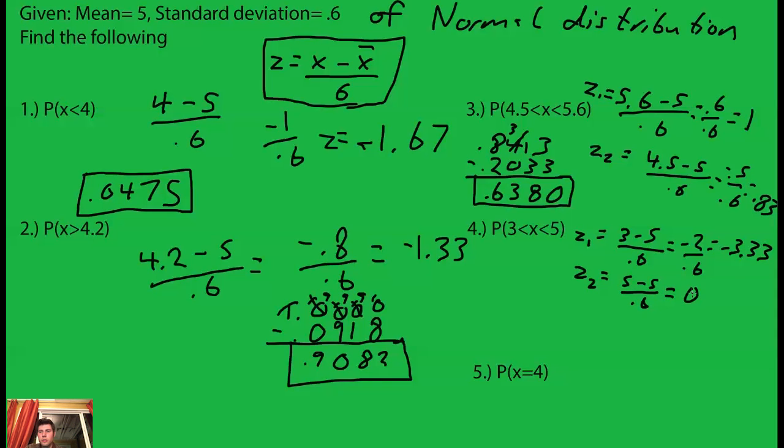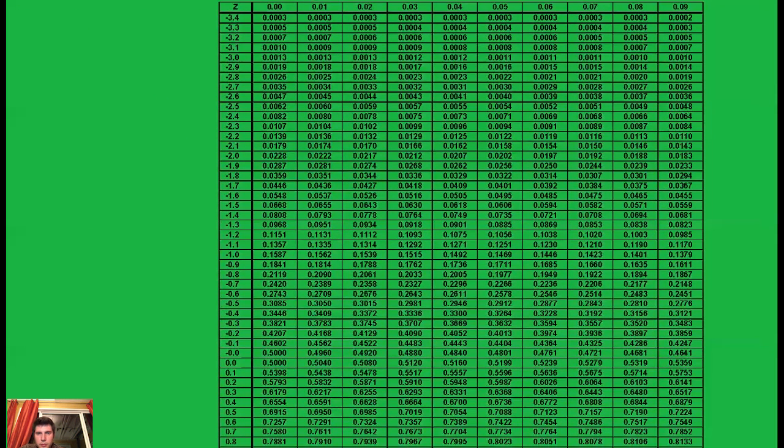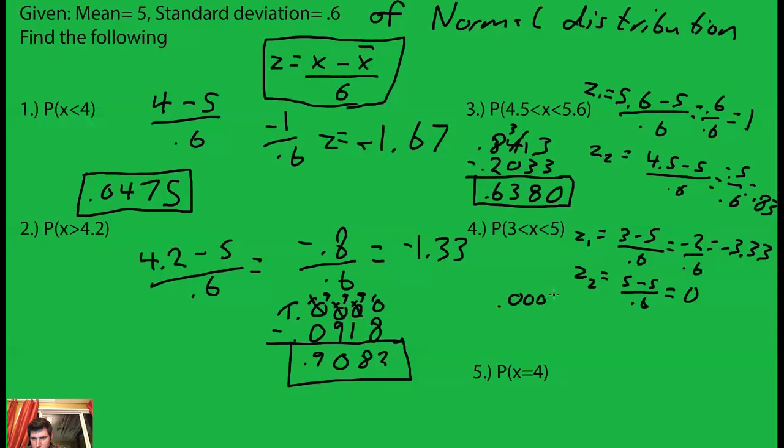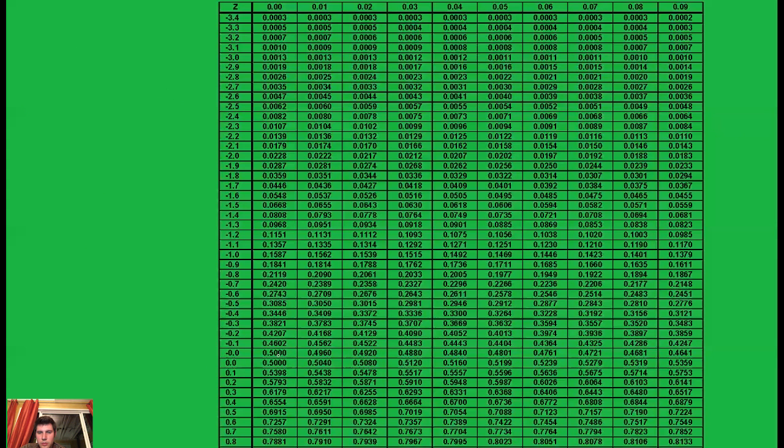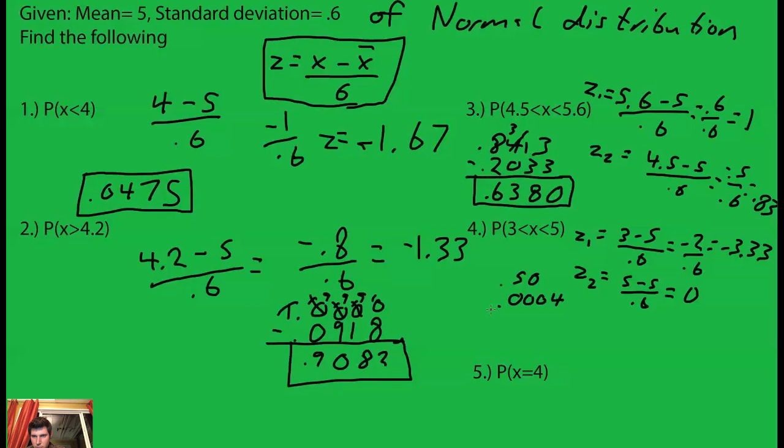Now let's do between 3 and 5. So now our two z scores are negative 3.33 and 0. Negative 3.33 is 0.0004, and we know that the 5, a z score of 0, should be 50 percent because it's going to be on the mean. So 0 gives us exactly 50 percent and we want to know the space between the two, and that's the probability that's between 3 and 5.